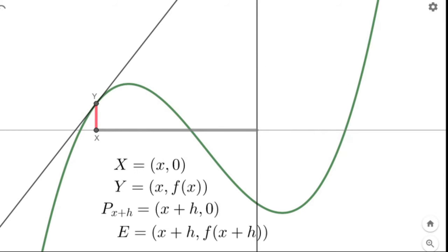We want to find the slope of this tangent line. Our problem is that we only know one point on the line — the point y. If we know what x is, we know what f(x) is. What we need to do is come up with some way of finding the slope of this tangent line.